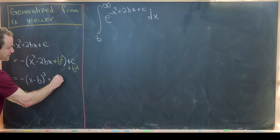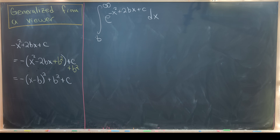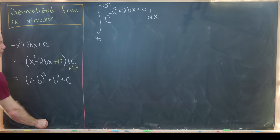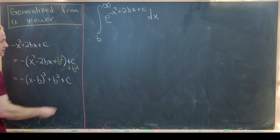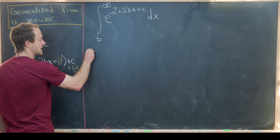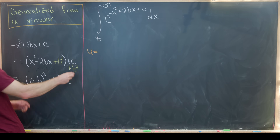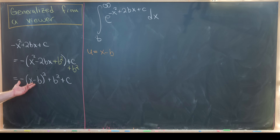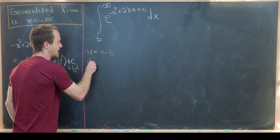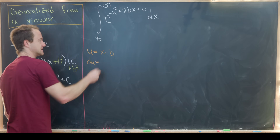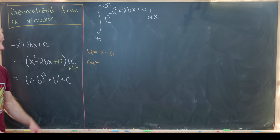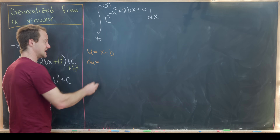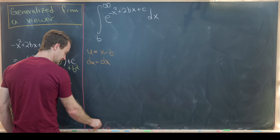And then we have b squared plus c on the outside. That really motivates us to do a change of variables. We let u equal x minus b, and then du will be dx, since that's just a linear function.